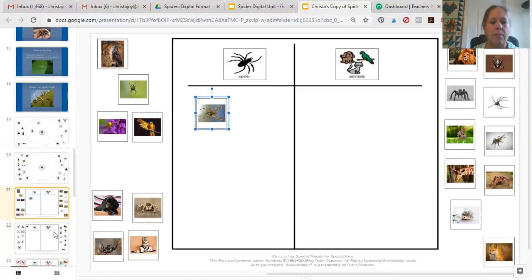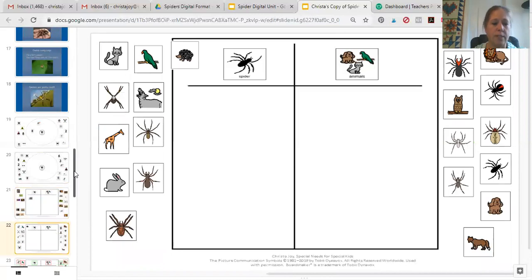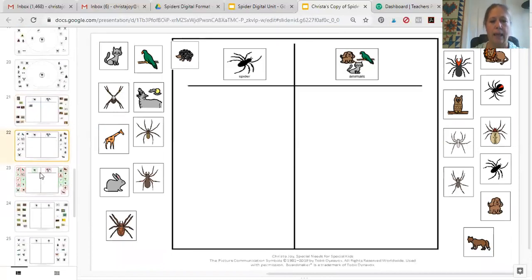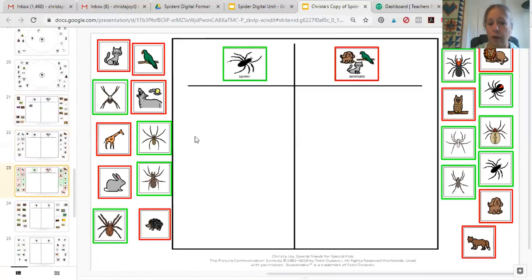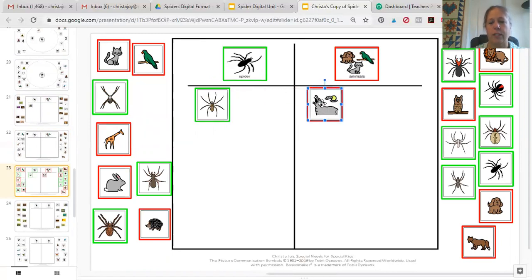The next example has the same thing but I used picture symbols instead of photographs, and then I gave you one that has color coding so for students that need even a little more support, they can use this green to the green and red to the red just to kind of help with that.